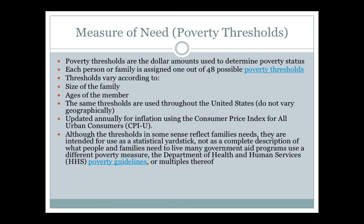There's also what we call a measure of needs. When someone lives below the poverty threshold, we're trying to understand that they can't make ends meet — they have certain needs they can't afford to maintain. Poverty thresholds are the dollar amounts used to determine poverty status. Each person or family is assigned to one of 48 possible poverty thresholds, basically based on the 48 contiguous states. Alaska and Hawaii are treated differently because the cost of living is so much higher there.